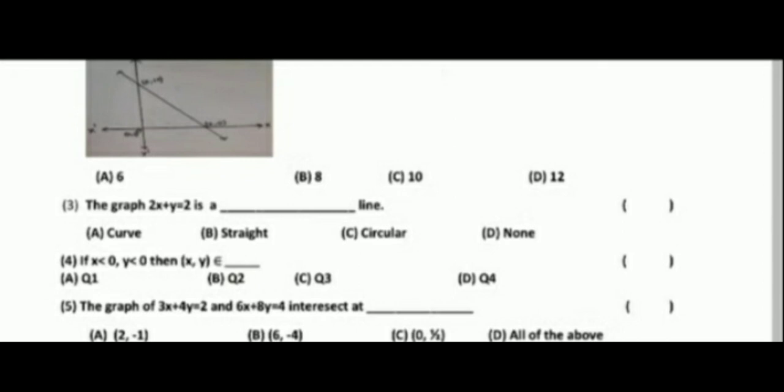Third question. The graph of 2x plus y equal to 2 is a: option A curve, option B straight, option C circular, option D none.